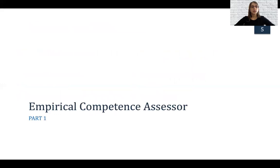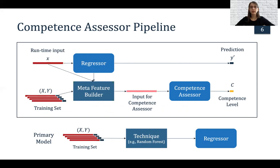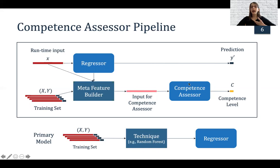I'm going to start with the empirical competence assessor. Here is the basic pipeline: we have our runtime input that we give to our regressor, and it gives us a prediction. In addition, we have this competence assessor. It receives the runtime input, the regressor model, and the training set. With this information, we generate what we call the meta features — the input we give to the competence assessor — and given this input, the competence assessor tells us the competence level of this prediction for this specific input.